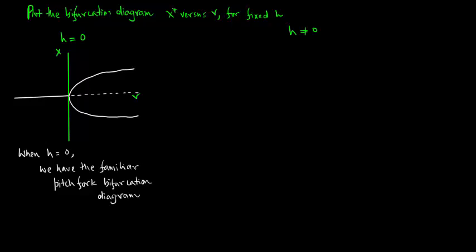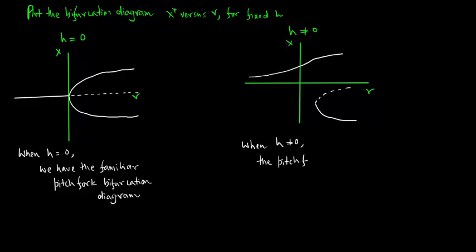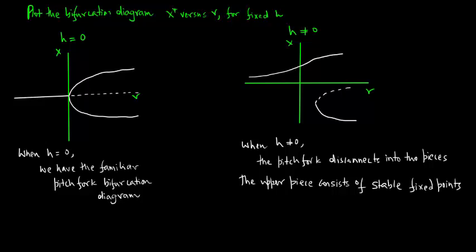Consider the case h equals 0. When h equals 0, we have the familiar pitchfork bifurcation. When h is not equal to 0, the pitchfork disconnects into two pieces. The upper piece consists of stable fixed points and the lower piece has both stable and unstable branches.